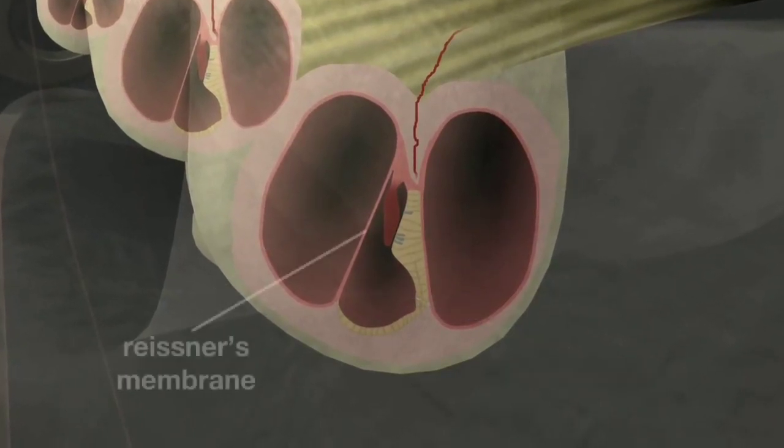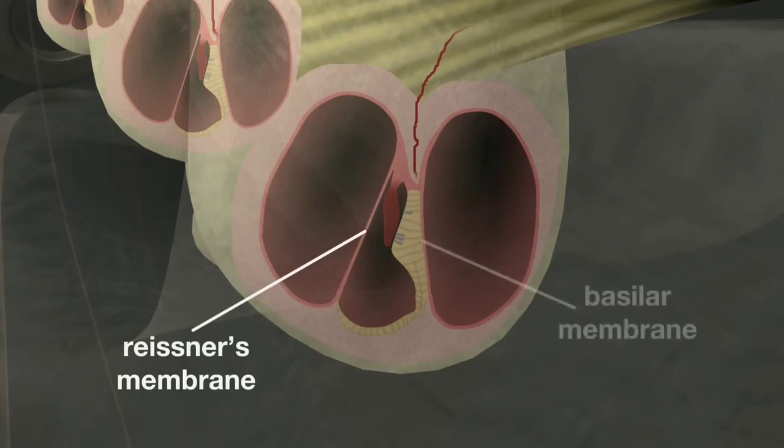The Reissner's membrane separates the scala vestibulae from the scala media, and the basilar membrane separates the scala media from the scala tympani.